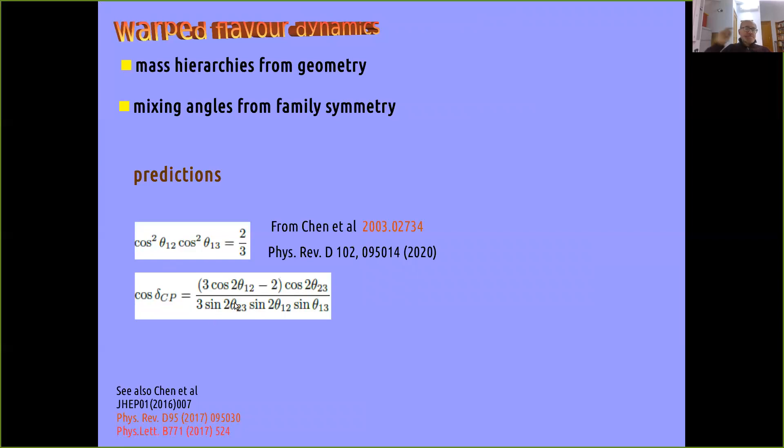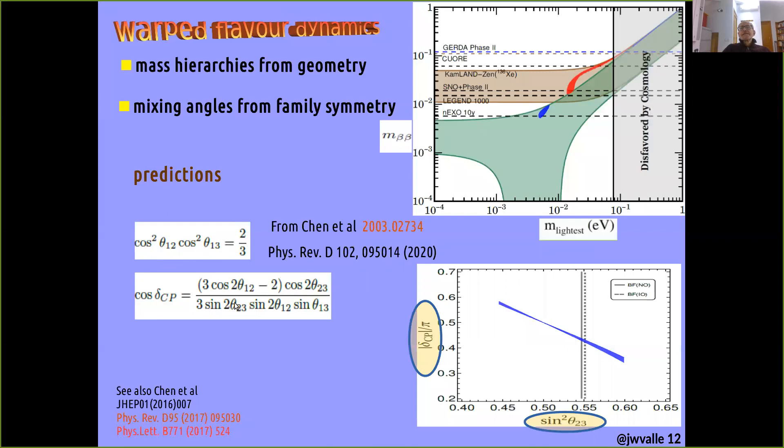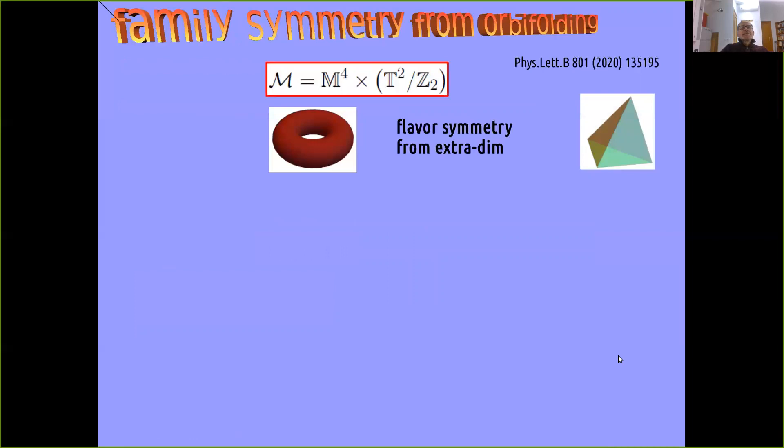In this way one may in fact predict things as simple as tribimaximal mixing pattern, indicated here by this very simple analytical form, which translates into very interesting predictions that can be probed: lower bound for neutrinoless double beta decay even for normal ordered neutrinos, and very tight predictions for neutrino oscillations. This is the modulus of delta CP versus the atmospheric mixing.